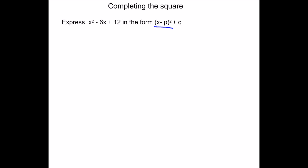The first thing we're going to do when we complete the square is put square brackets around the x squared part and the x part. I'll explain why we do that on the next question, but for now it makes it easier for tackling all the questions in the same way, and the plus 12 just stays where it is. So all I've done is put square brackets around the x squared and the 6x part.